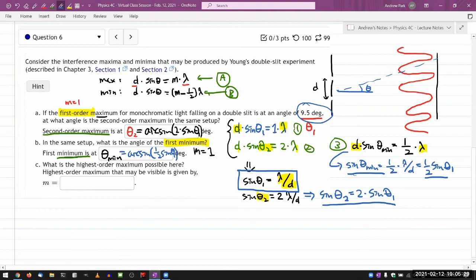What is the highest order maximum possible here? Okay, highest order maximum that may be visible is given by. All right, let me just write things out. So I'm dealing with the maximum. So I'm dealing with D sine theta. And the unknown that I'm being asked for is not the angle. Unknown that I'm being asked for is N, the order, N max times lambda. Okay. I can solve for N max. And when I do, I get D over lambda times sine theta.